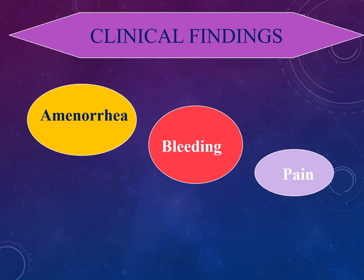Now let's talk about the clinical findings of threatened abortion. If a lady suffers from threatened abortion, she will experience symptoms in the following order. First, there is amenorrhea — absence of the menstrual cycle. Then suddenly she will start with a little amount of bleeding, which shows that separation has started. Lastly, she will suffer from mild pain in the back or lower abdomen, similar to menstrual cramps, but not the severe type of pain as experienced in labor.